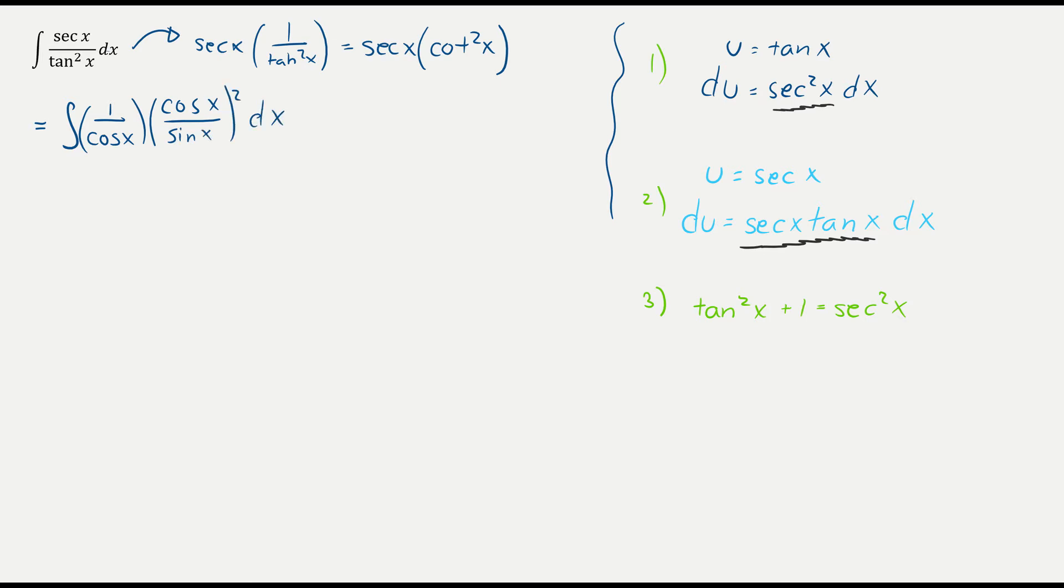Look what happens. We have one of these cosines gets reduced, leaving me one cosine x up top and a sine squared x down low. So it almost looks like we're in the same spot here as we started out, because it's a trig divided by a trig squared.